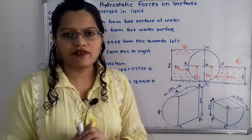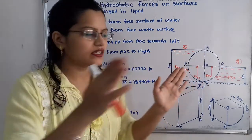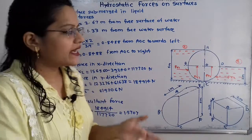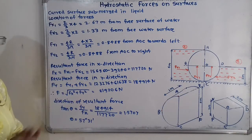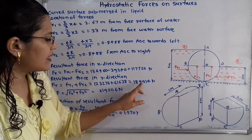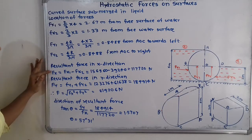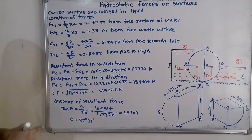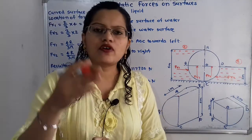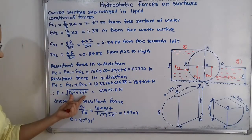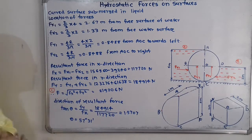For the resultant force in the y-direction: FY1 and FY2 are both in the same upward direction, so FY = FY1 + FY2 = 123,276 + 61,638 = 184,940 Newton. The total resultant force is F = √(FX² + FY²) = √(117,720² + 184,940²) = 219,206 Newton. This is the answer for the first question.